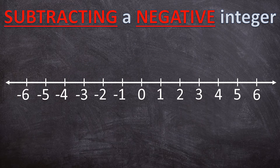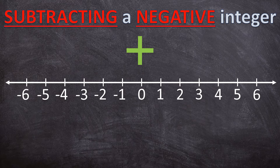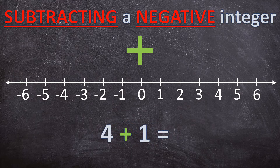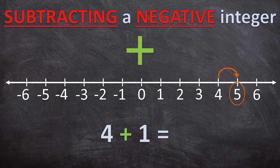Now let's have a look at the last rule. When you are subtracting a negative integer, you are simply going to add the integer. Let's have a look at a few examples: 4 minus negative 1 can simply be written as 4 plus 1. Let's have a look at the number line — 4 plus 1 is equal to 5.